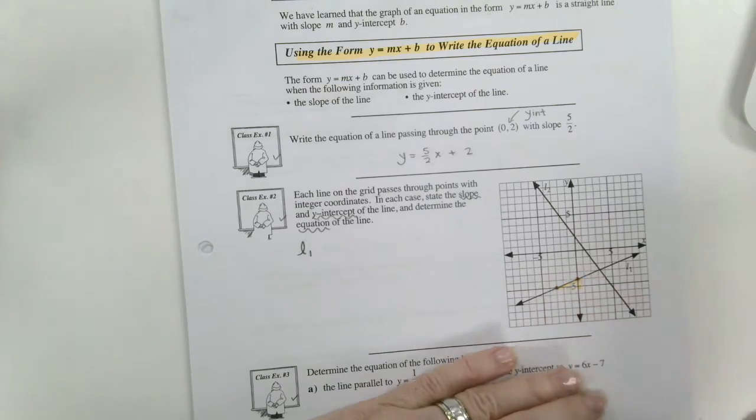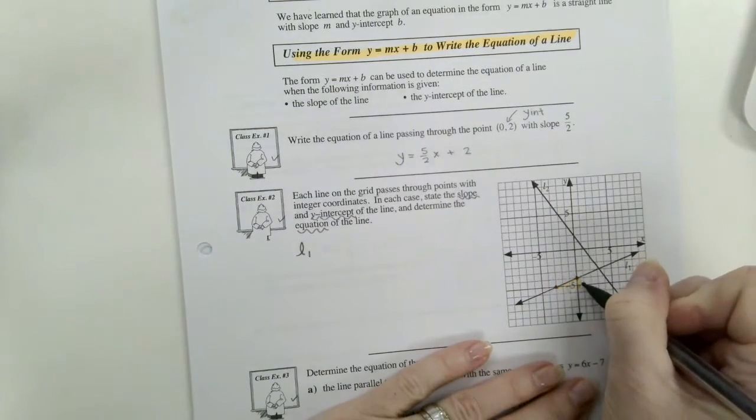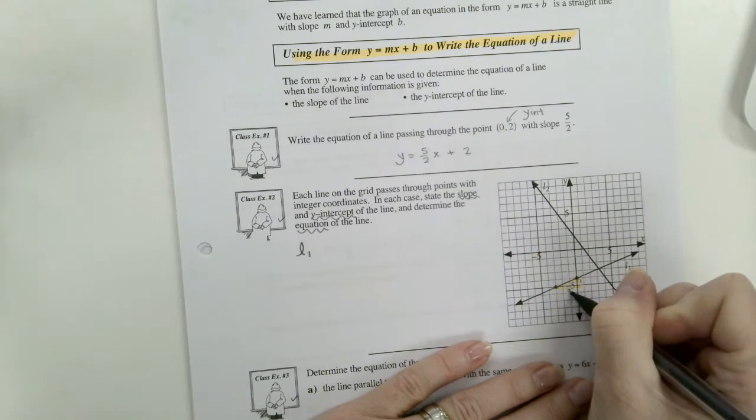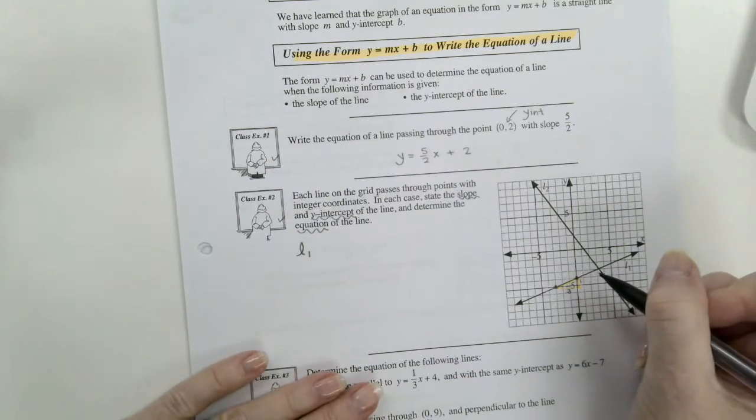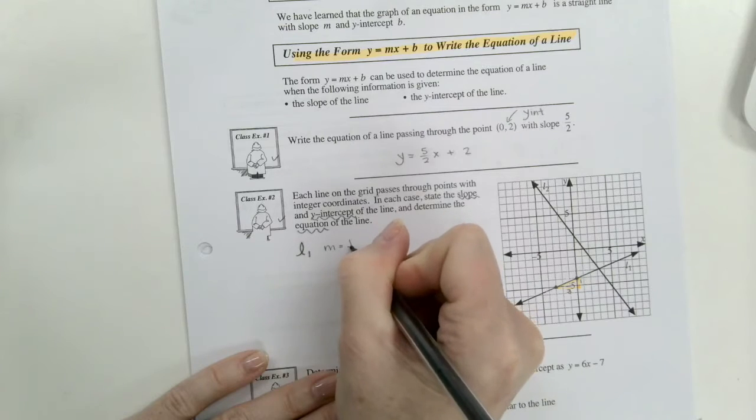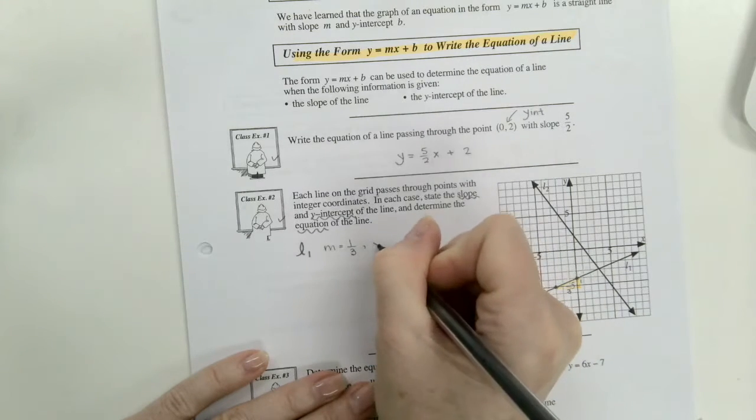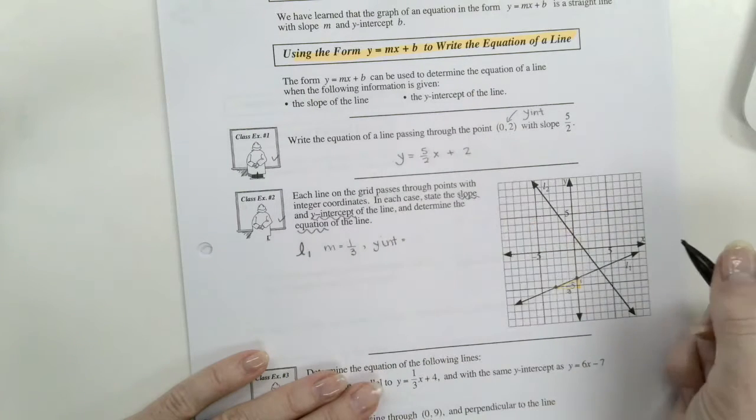We know that it has a rise of 1 and a run of 3. And it's going uphill, so it's a positive slope. So m equals rise of 1, run of 3. And the y-intercept is a negative 4.